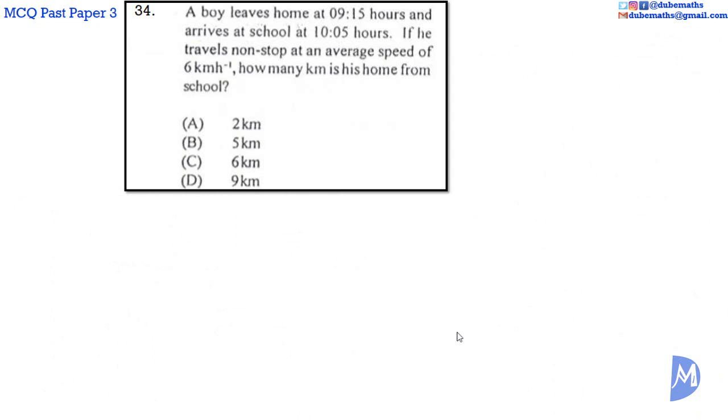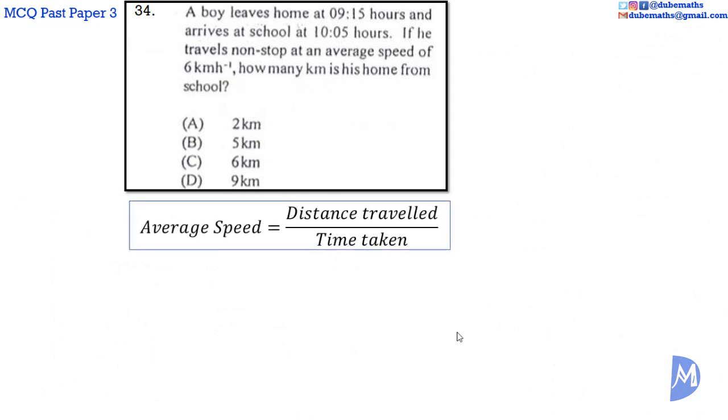Question 34. Average speed is equal to the distance travelled over the time taken. The boy's average speed was 6 km per hour. He travelled from 09.15 hours to 10.05 hours. Time taken is equal to... 5 cannot subtract 15 to leave a positive number. We convert 1 hour to minutes. When we take 1 hour from 10, we are left with 9.